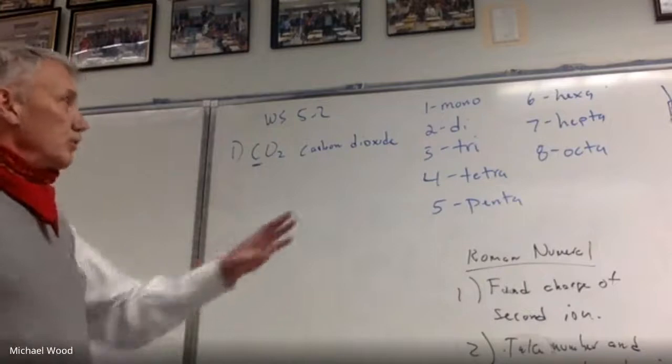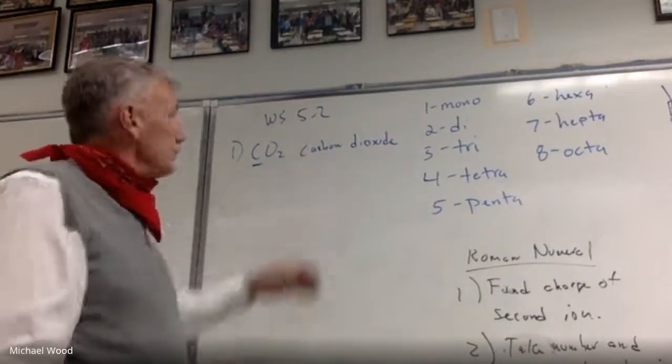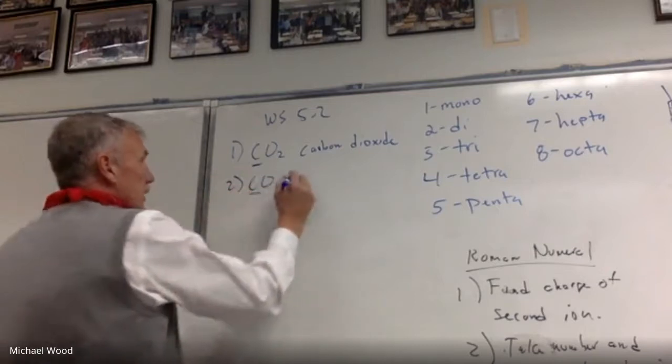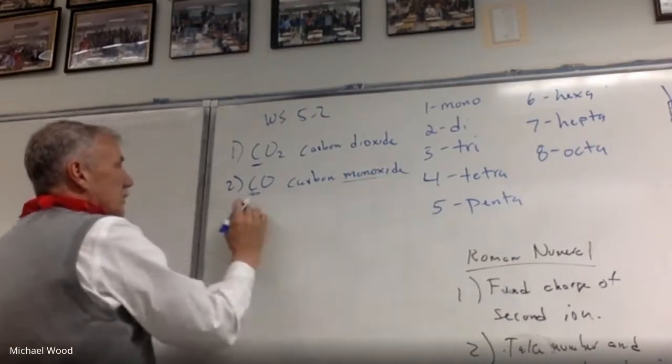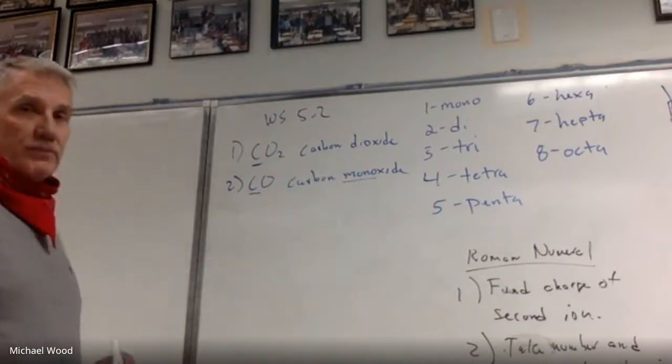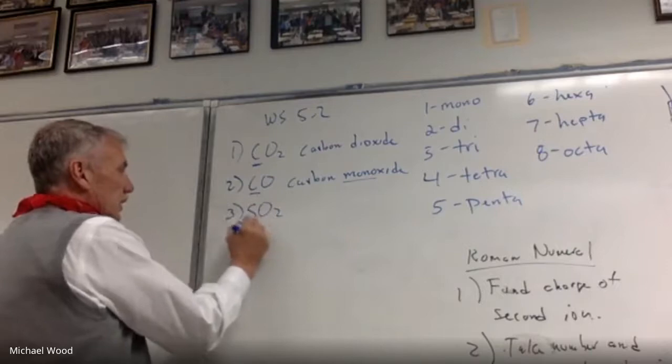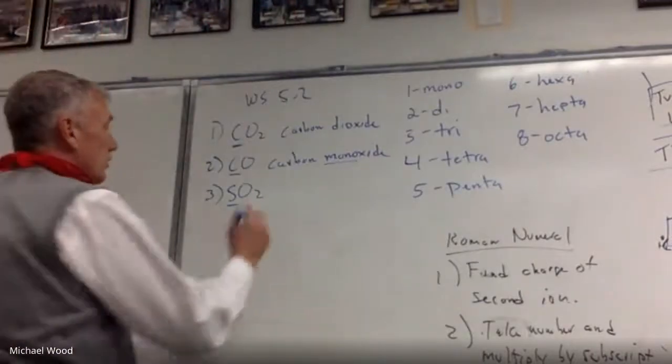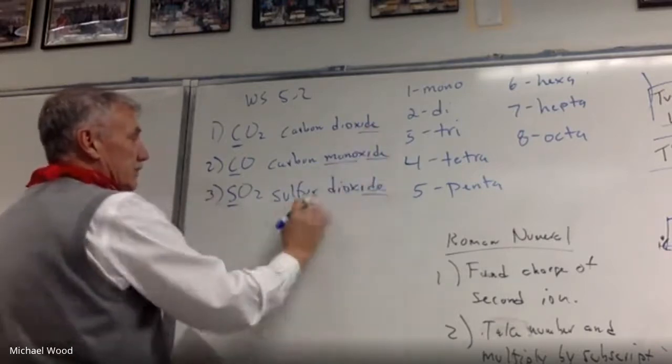When you decide it's a type 3, that's where we're going to use these prefixes. And the only time I don't use a prefix is if the first element's a 1. Number two, CO. Carbon is a type 3 because this is a non-metal. So it's carbon monoxide. The second element, whatever it is, you always use the prefix. The first element, if it's a 1, you don't write in the 1. So then SO2, I look sulfur up on the periodic table. Sulfur's right here. It's another non-metal. So that means it's a type 3. So I have sulfur dioxide.